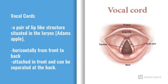Vocal cords are a pair of lip-like structures situated in the larynx, commonly called the Adam's apple. They are placed horizontally from front to back, attached at the front and can be separated at the back. The air from the lungs passes out through the windpipe and the larynx.